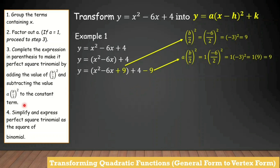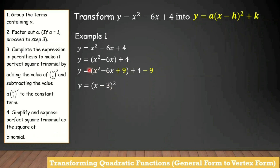Next, we go to step 4: simplify and express the perfect square trinomial as the square of a binomial. From inside the parentheses, take the square root of the first term — the square root of x squared is x. Copy the sign of the middle term, which is negative. Then take the square root of the last term — the square root of 9 is 3 — and add the squared symbol. Then, positive 4 minus 9 equals negative 5.